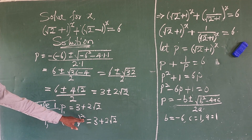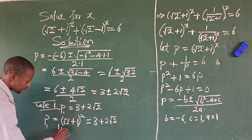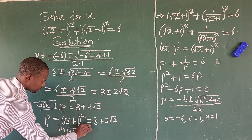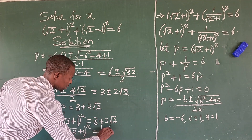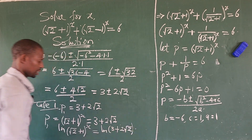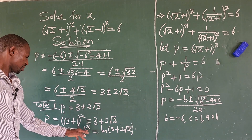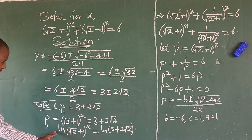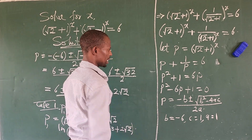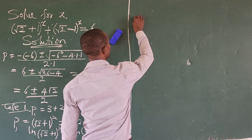To solve for x, we apply the natural logarithm to both sides: ln[(√2 + 1)^x] = ln(3 + 2√2). Using the power rule of logarithms, we bring the exponent down: x · ln(√2 + 1) = ln(3 + 2√2).